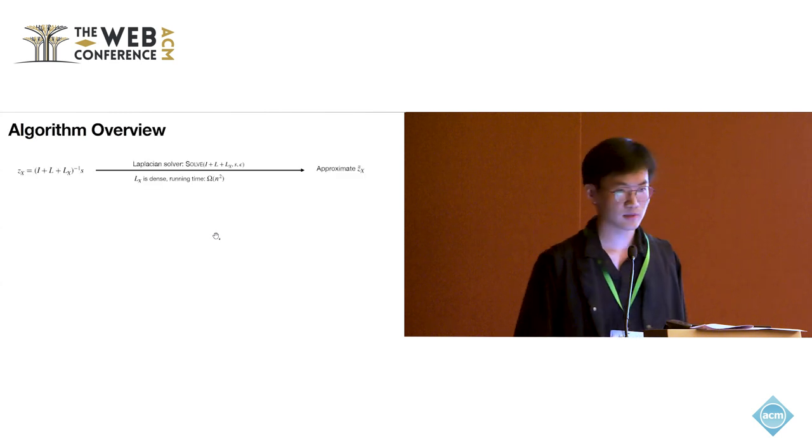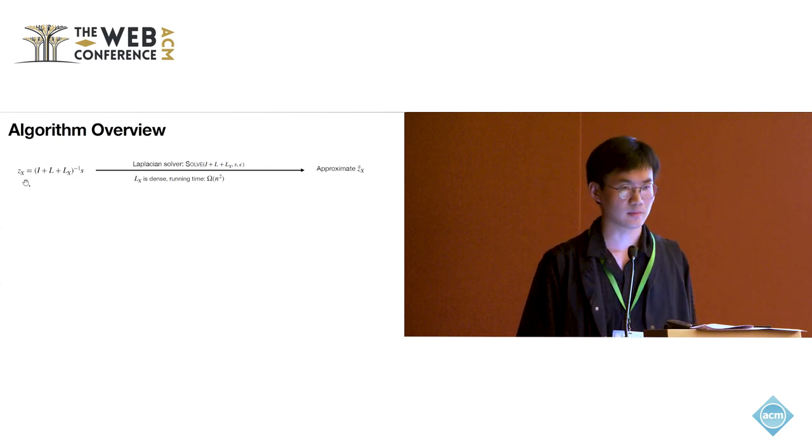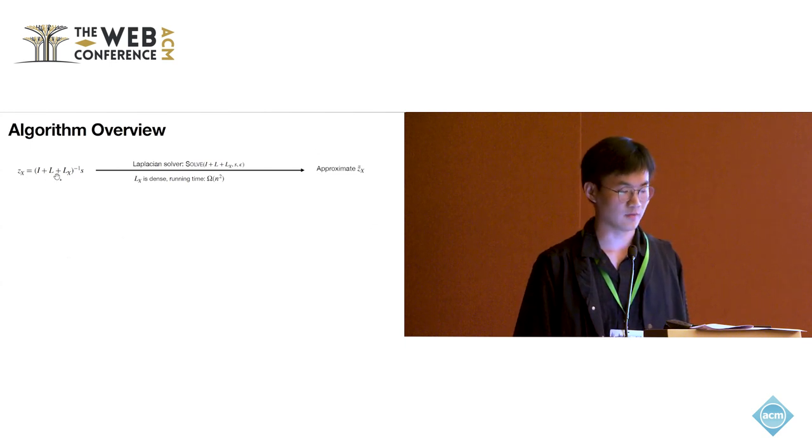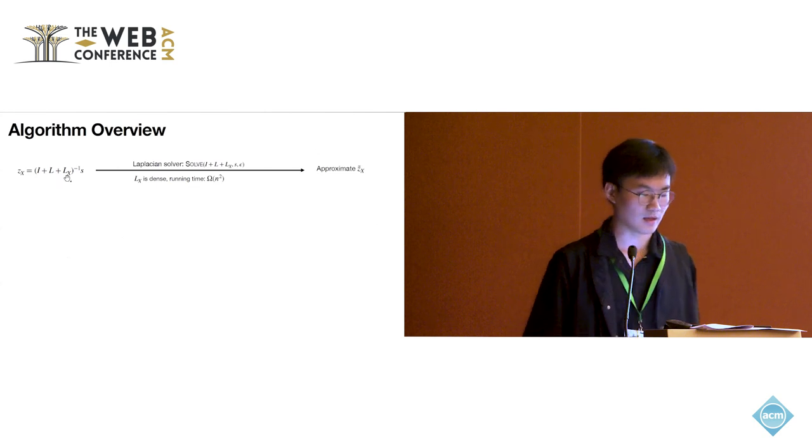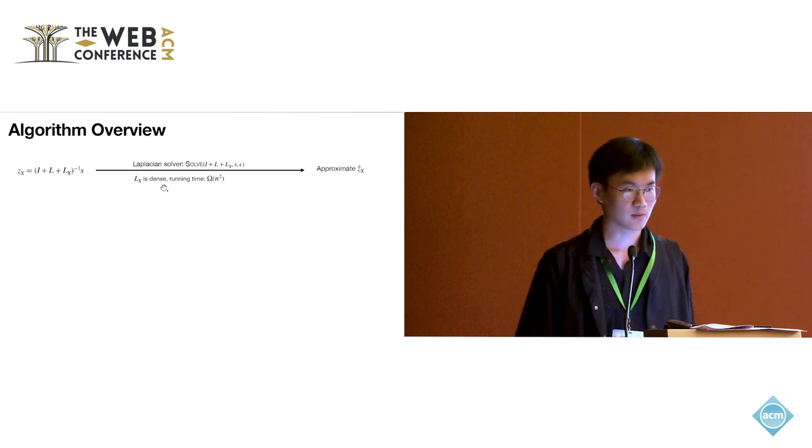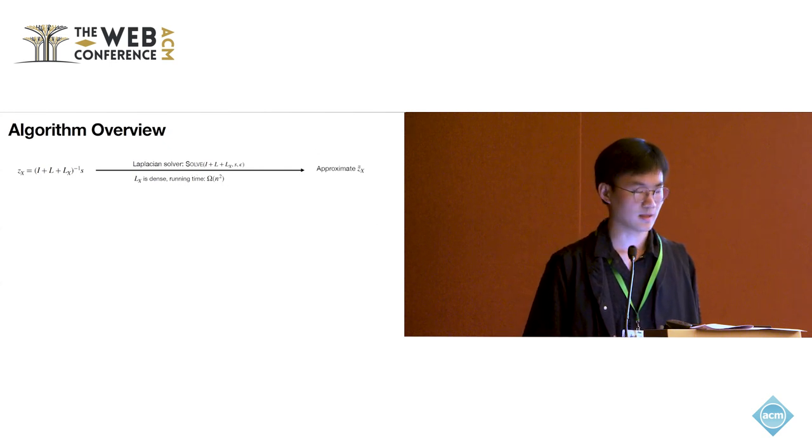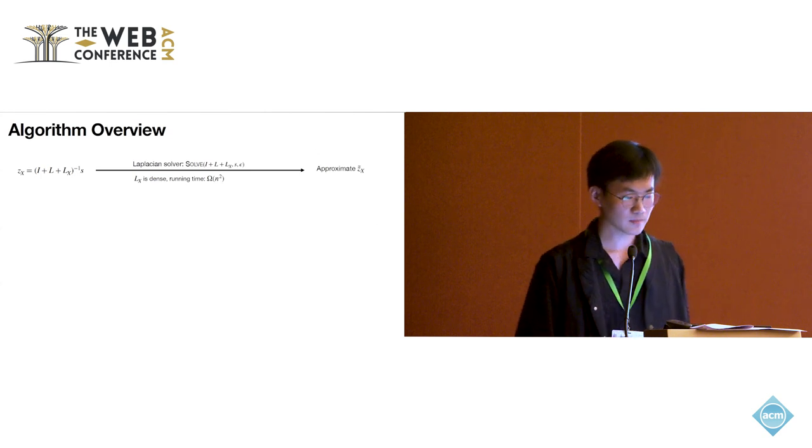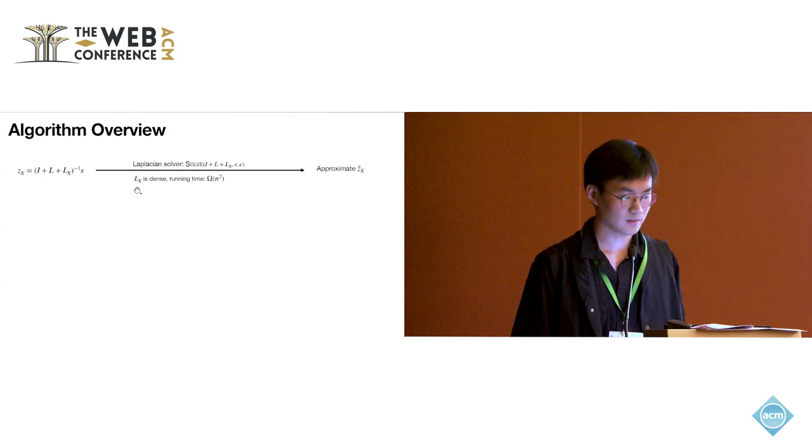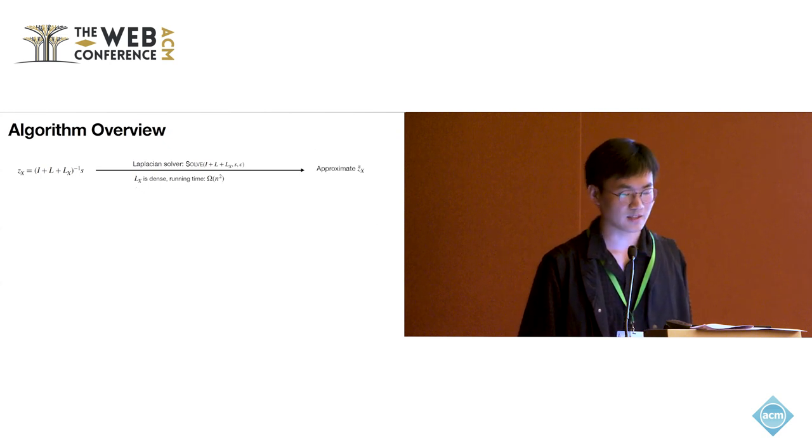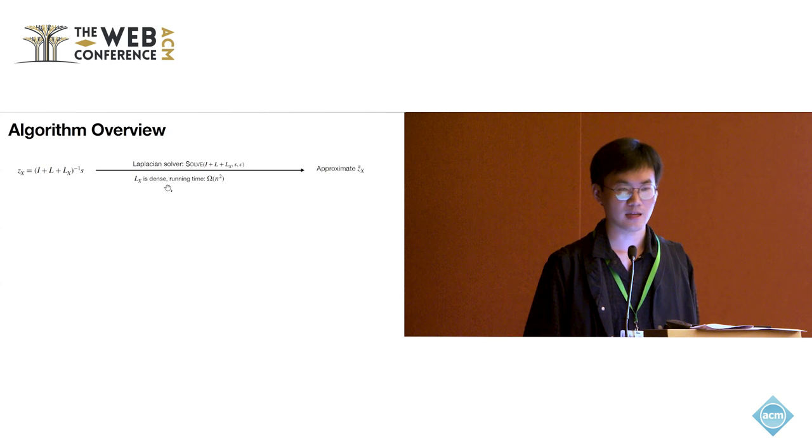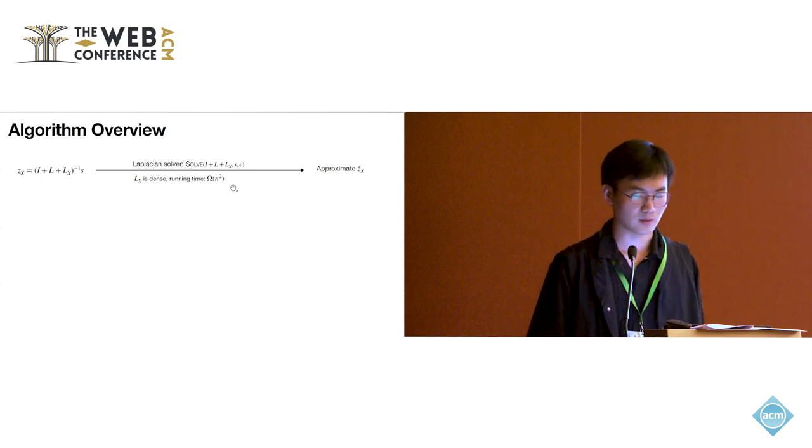But here is a huge computational challenge. If we revisit the objective function, the computation of the expressed opinion equilibrium form is very difficult because it involves the computation of the matrix inverse. In practice, we could use approximation algorithms, which is a Laplacian solver to compute the approximate expressed opinion. But actually, there's a problem because we use the extended version of the FJ model, so the Laplacian LX is very dense, and it ends up with running time of omega n squared.